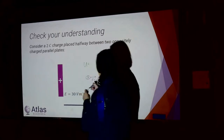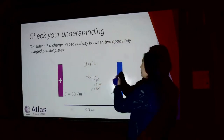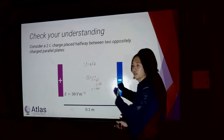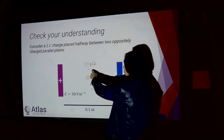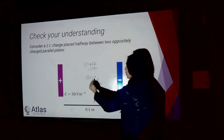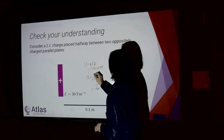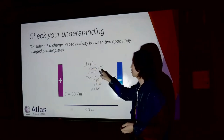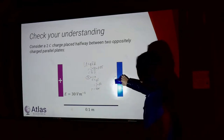As Jono said, kinetic plus potential energy should stay the same throughout, so all the potential energy gets converted into kinetic energy. We have an initial potential energy of Q times E times D. Q is 2, E is 30, and D is 0.05 meters — the charge only moves half the plate distance. That gives U equals 2 times 30 times 0.05: it's easier to do 2 times 0.05 first, giving 0.1 times 30, which equals 3 joules. So our final kinetic energy is 3 joules.